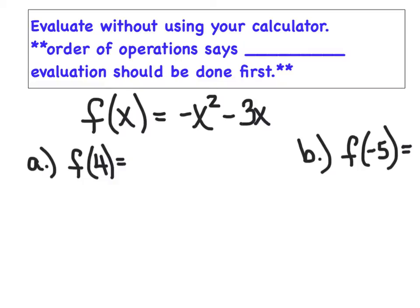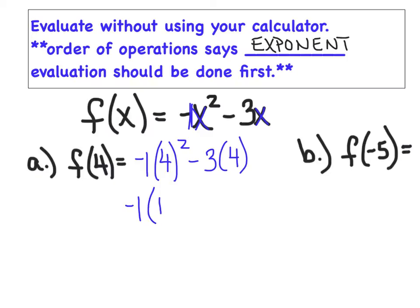Let's get into the guts of today's lesson and start doing some number crunching. We want to evaluate these without using our calculator. A quick reminder, our order of operations says that exponent evaluation should be done first. To evaluate f of 4, I'm going to substitute a 4 for these x's right here. There's an invisible negative 1. Substitute the 4, square it, minus 3 times 4. We have to turn that 4 into a 16 first because the exponent has to come first. Then I'll multiply the negative 1 times the 16, multiply the 3 times the 4, and subtract those two numbers to make negative 28.